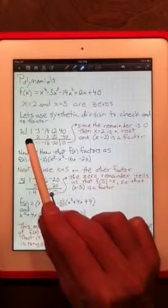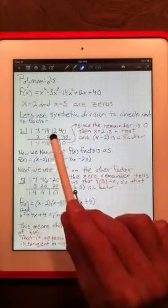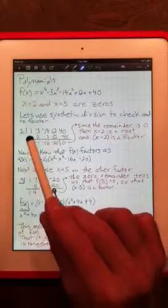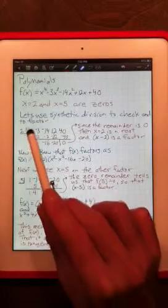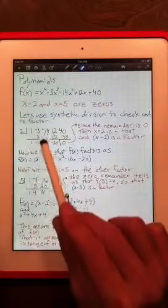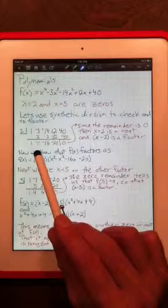Coefficients of this polynomial are 1, negative 3, negative 14, 12, and 40. Synthetic division works by adding when you come down. 1 plus nothing is 1. 2 times 1 is 2. Add coming down, negative 3 plus 2 is negative 1.